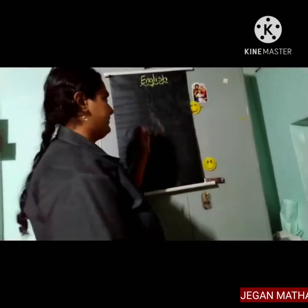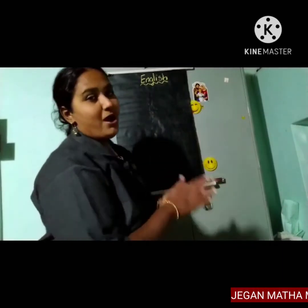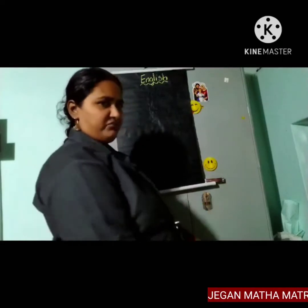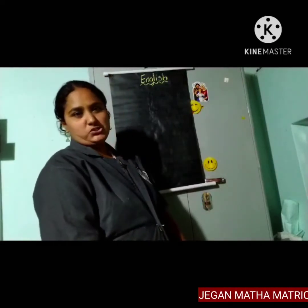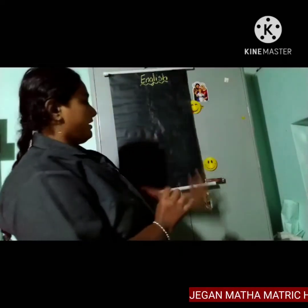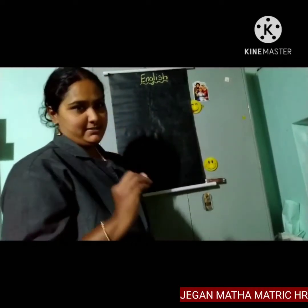Happy morning, children! Today I'm going to teach you English. Now you have learned A to Z with sounds and pictures. Today we're going to do a revision. I'll draw an object and according to the object, you have to circle the letter. Okay children, let's see.